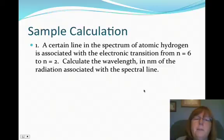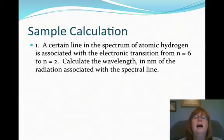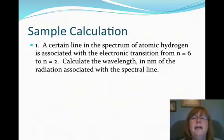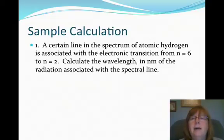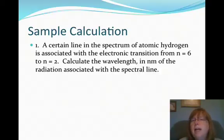It's a plug-and-chug equation, but it can be tricky. Here's the problem: an electron transitions from energy level n equals 6 down to energy level n equals 2. Calculate the wavelength in nanometers of the radiation associated with this spectral line. This equation is only accurate for the hydrogen atom, that one-electron species. Stop the video, work it out, and see what you get. Once you're done, advance to check your answer.